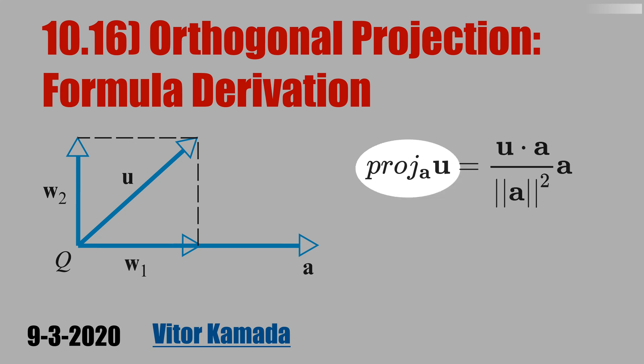We read this term as orthogonal projection of u on a. The orthogonal projection of u on a is the vector w1.